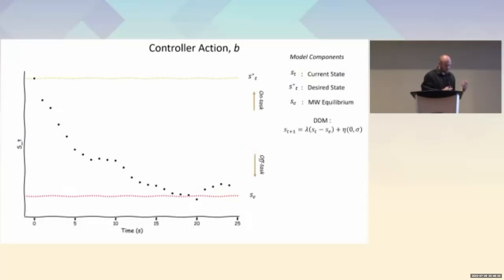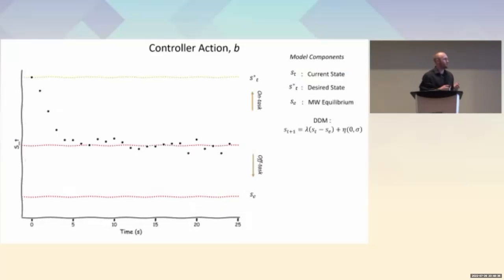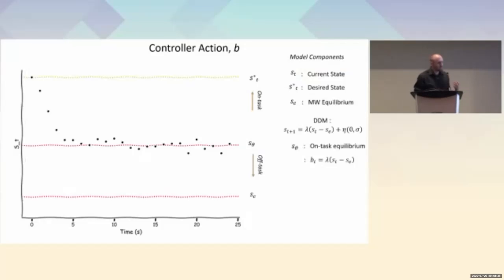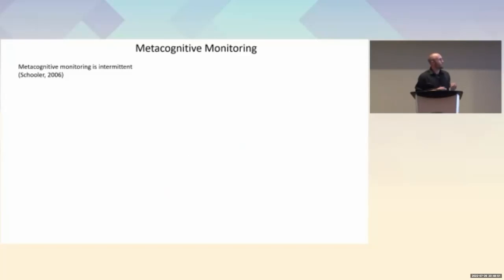With the addition of control, instead of drifting to mind wandering, we now drift to a mean on-task equilibrium — corresponding to the most common phenomenological state during meditation, where we're on task and working hard to remain so.